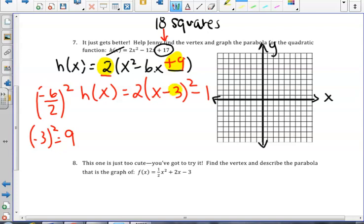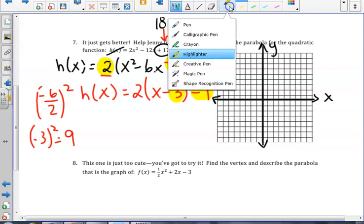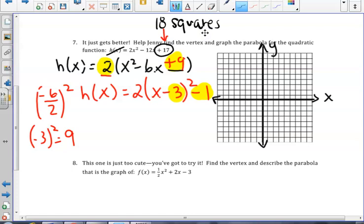The vertex in this case is 3, negative 1. If I plot the vertex, 1, 2, 3, negative 1, I'm going to use the same rule as the last question to find my other two points.